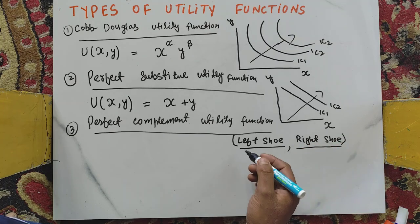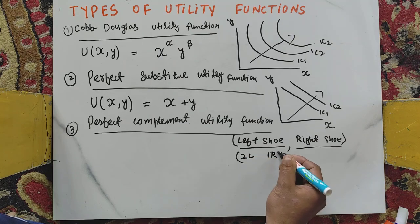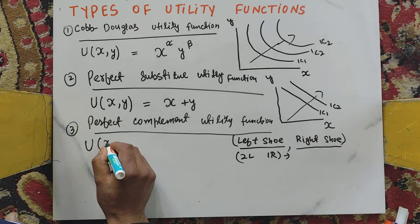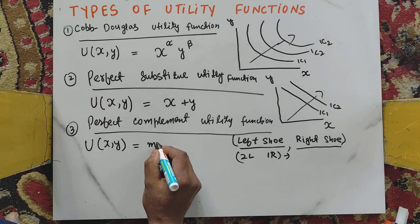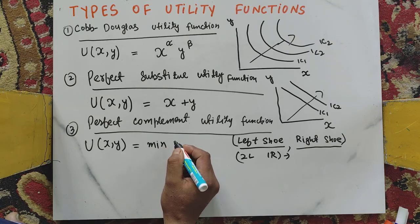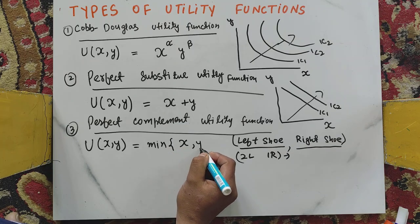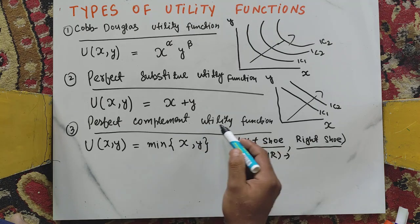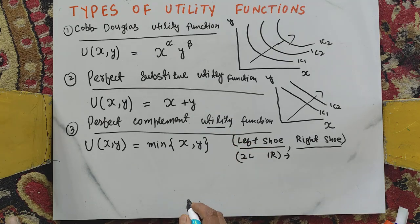If we have two left shoes and one right shoe, it gives us the same utility as one of each. The functional form is: utility is a function of the minimum of X and Y, written as U = min(X, Y). This is also called the fixed proportion utility function.